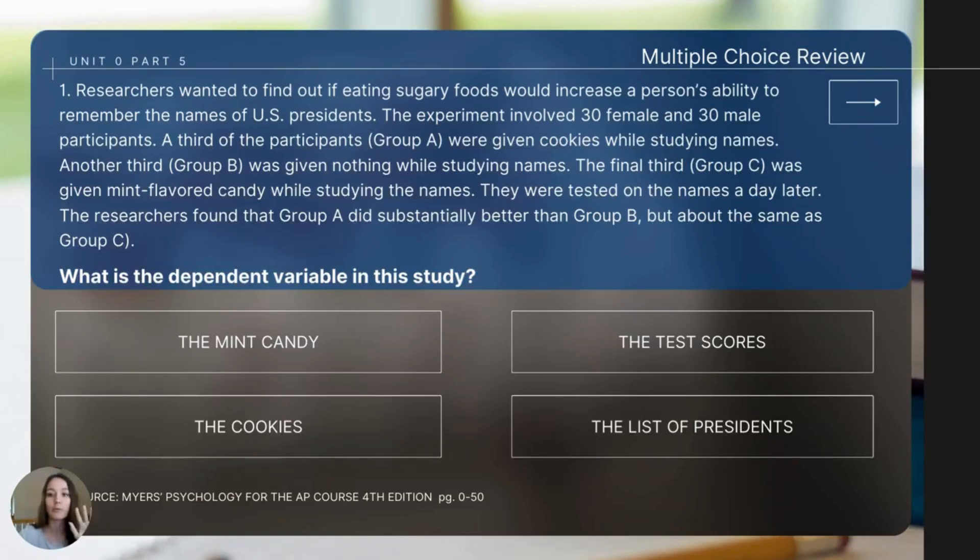Throughout the course, you will be presented with different studies, you'll be asked to identify the elements of experimental design, and let's practice with a new example. You will use this very same experimental study for all five questions. After question one, I will only read the questions and not the study description. It will remain at the screen if you want to reread it. And like previous videos, I will not read the answer set, so just be sure to pause the video to give yourself enough time to determine the correct answer. So this scenario goes, researchers wanted to find out if eating sugary foods would increase a person's ability to remember the names of US presidents. The experiment involved 30 female and 30 male participants. A third of the participants, group A, were given cookies while studying names. A third, group B, was given nothing while studying names. The third final group was group C, which was given mint flavored candy while studying the names. They were tested on the names a day later. The researchers found that group A did substantially better than group B, but about the same as group C. What is the dependent variable in this study?